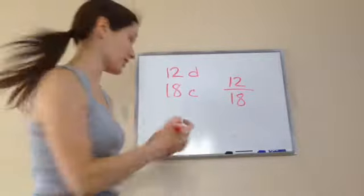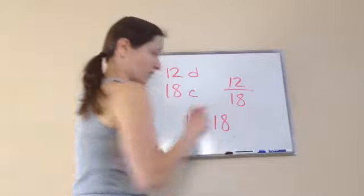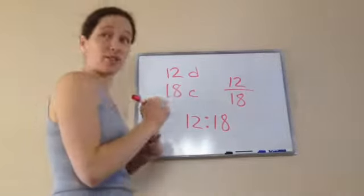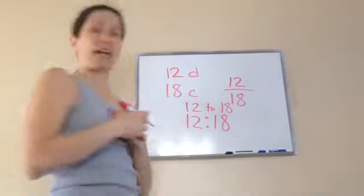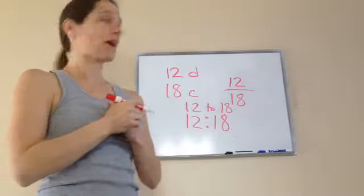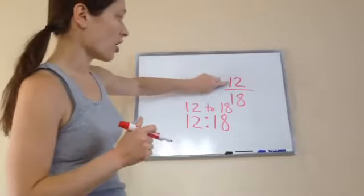Another way to write a ratio is like this. And another way to write a ratio is this: 12 to 18. So all of these tell me the ratio from dogs to cats.